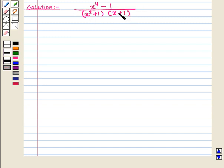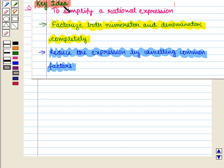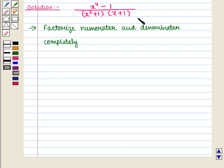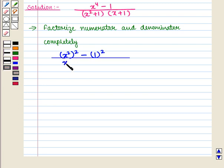We have to simplify it. From the key idea we know that to simplify a rational expression, we first factorize both numerator and denominator completely. The given expression can be written as x square whole square minus 1 square, whole upon x square plus 1 the whole into x plus 1 the whole.